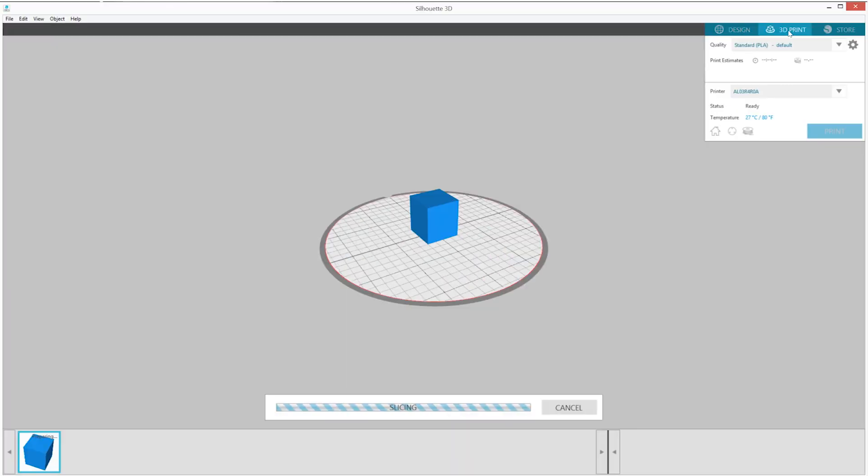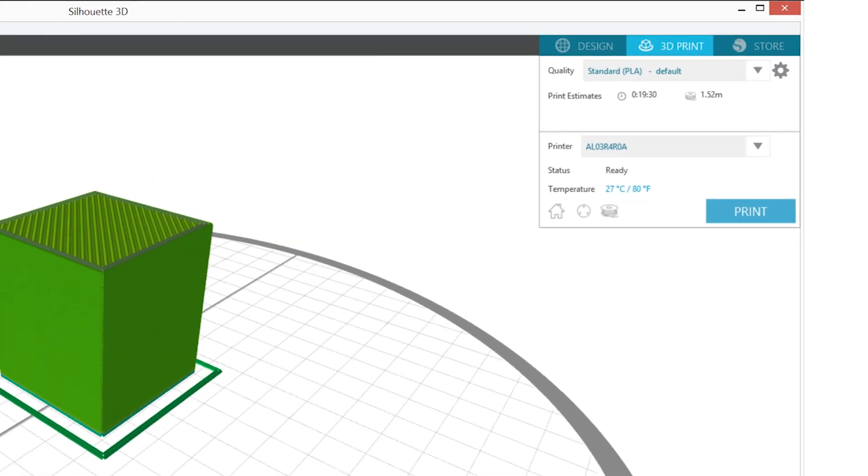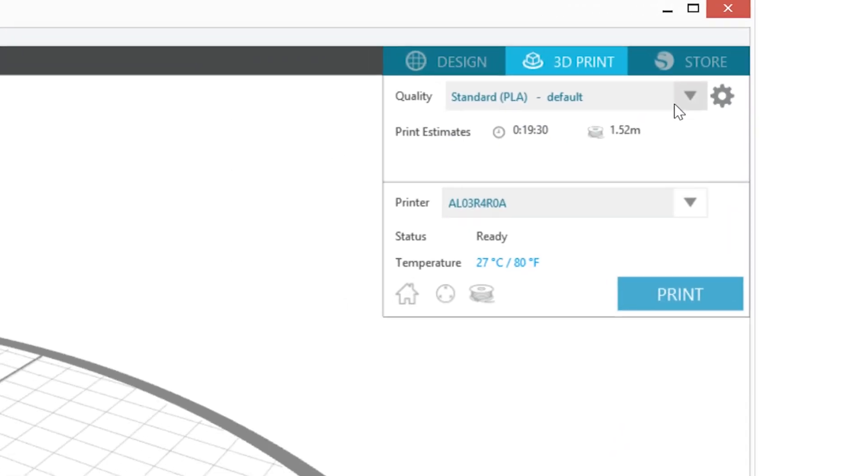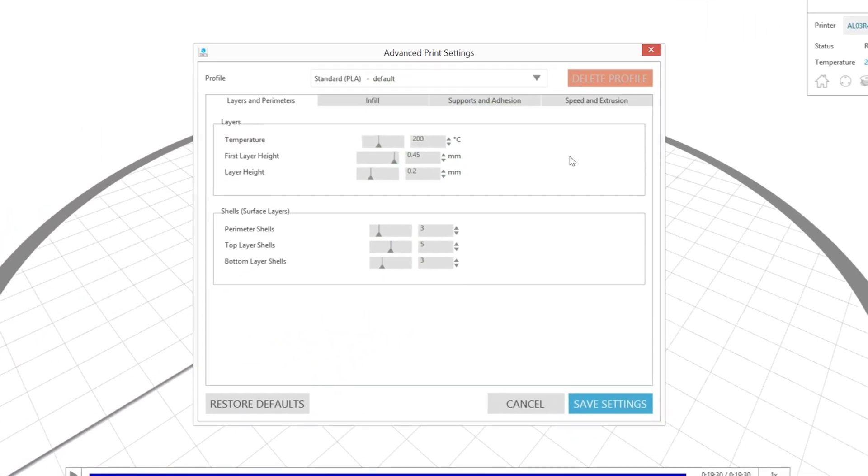Next, go to the 3D Print tab. The Silhouette 3D software will automatically start slicing your design according to the standard print profile. In the upper right-hand corner, there is a drop-down menu where you can select the quality of the print. You can select one of the default print profile settings: draft, standard, and high quality. Or you can make your own print profiles by clicking on the gear button to the right to adjust the settings.